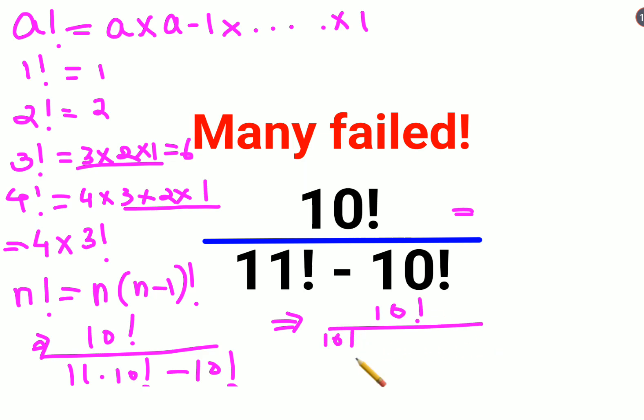So I can take 10 factorial outside and I am left with just 11 minus 1. So now if you look closely this and this is cancelled.